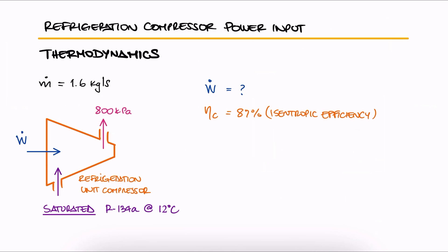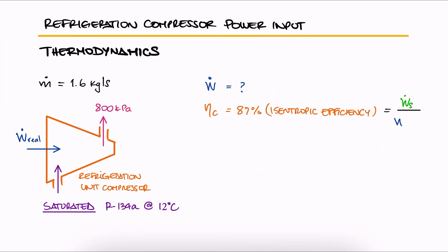Since isentropic efficiency is defined as the necessary work input of an isentropic compressor over the necessary work input of the real compressor, as explained in the main lecture video, we can rearrange this expression to solve for the work of the real compressor.